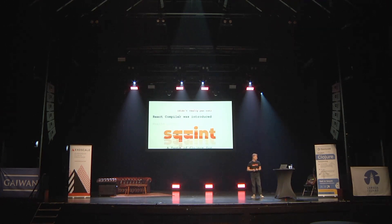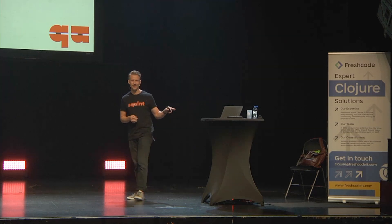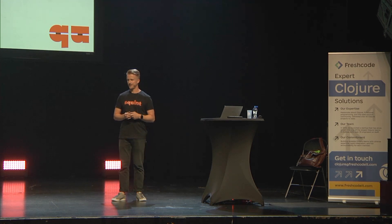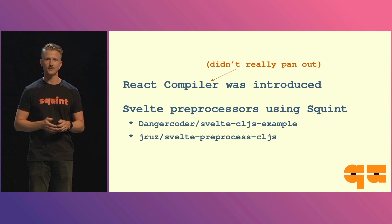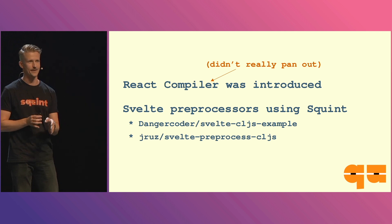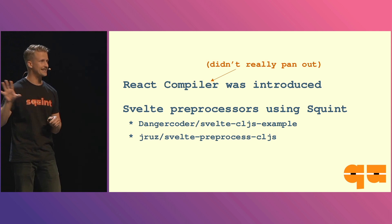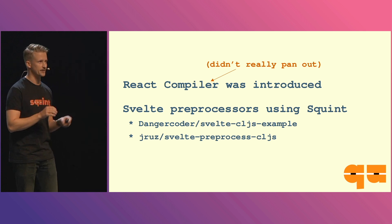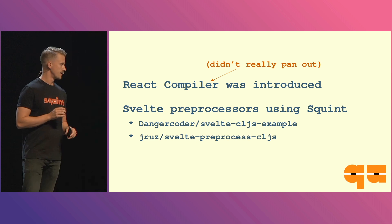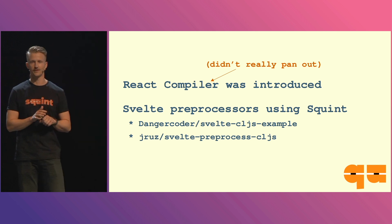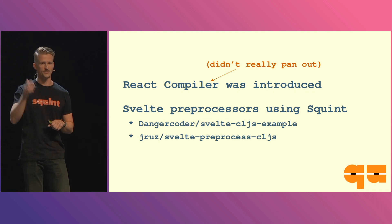The React compiler was the catalyst for this talk. I got word that the React compiler was going to be a thing and I thought: wouldn't it be cool if we could do ClojureScript at compile time and get the JavaScript into the React repository and project without JavaScript even knowing about it? This was also the same time as the call for proposals for Heart of Clojure was announced, so it was very top of mind for me.